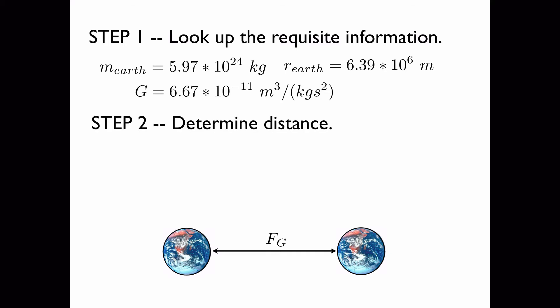Step two is determine the distance. Now it was said in the problem that the earths were located five earth radii apart as measured from their surfaces.